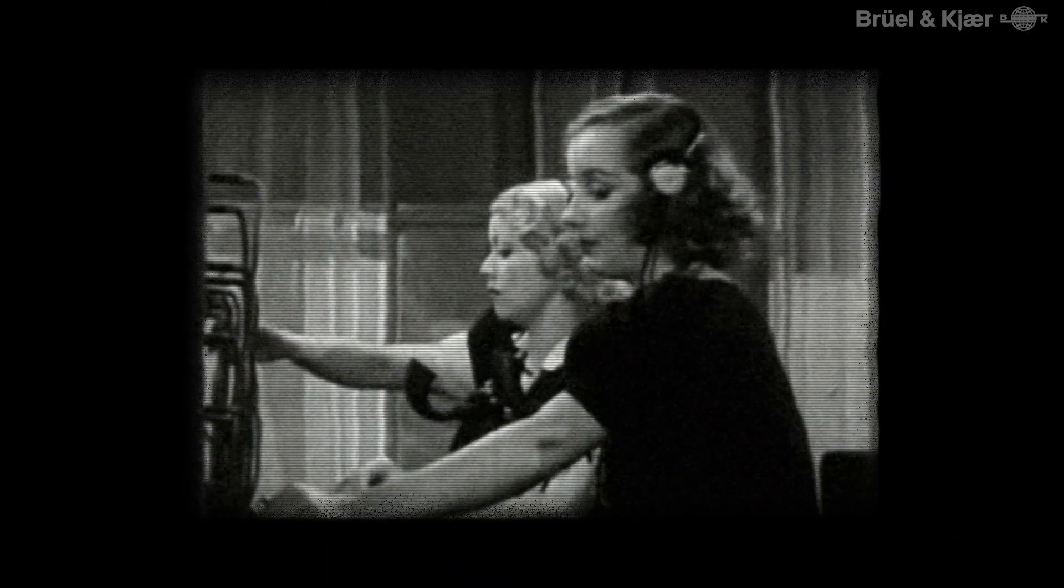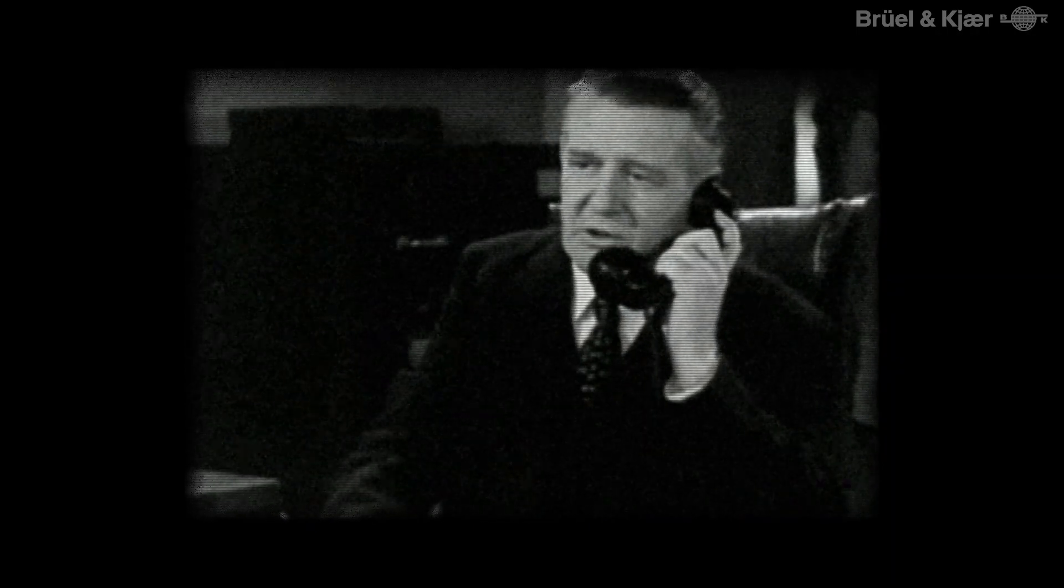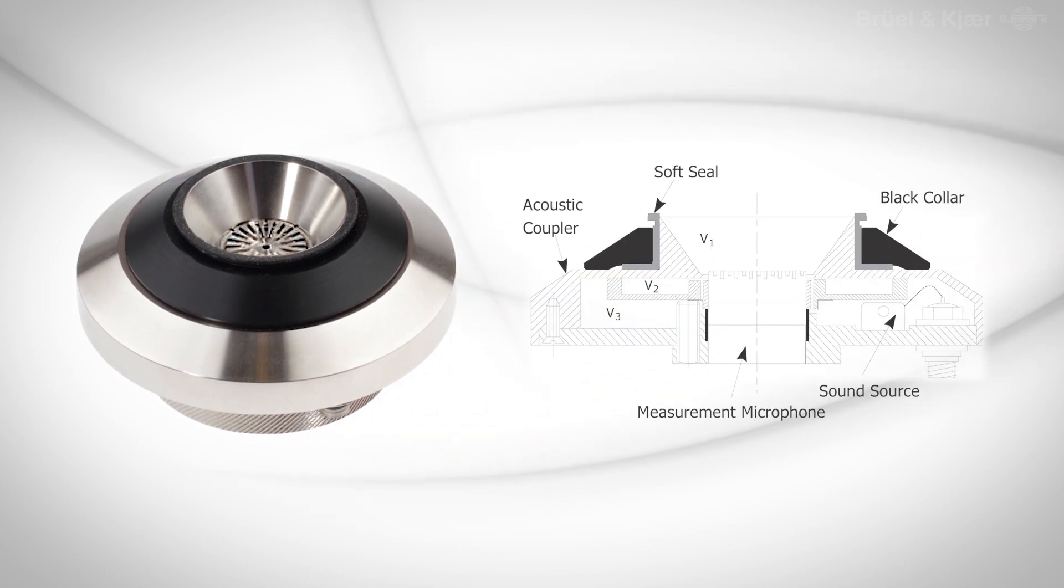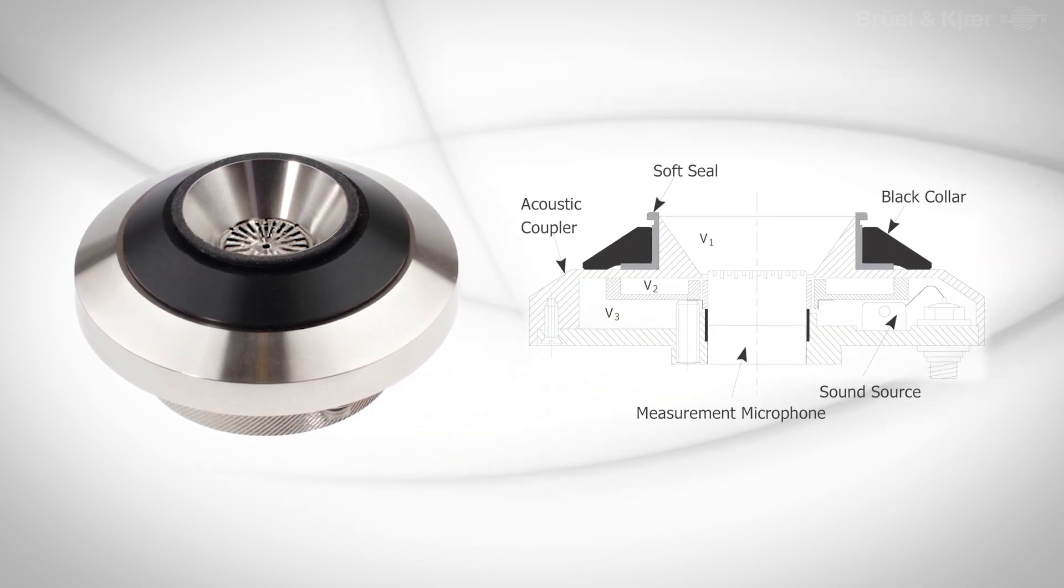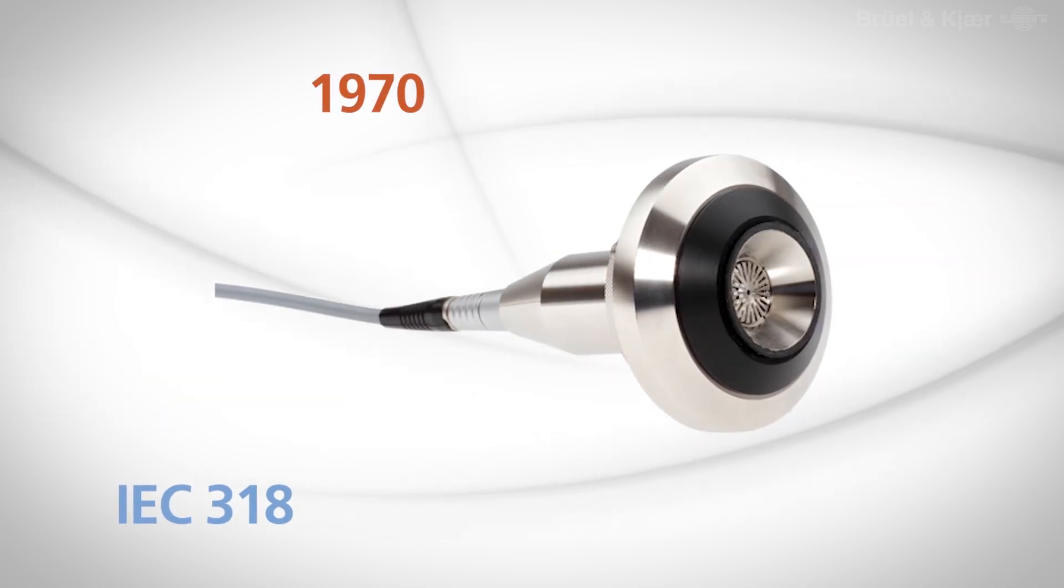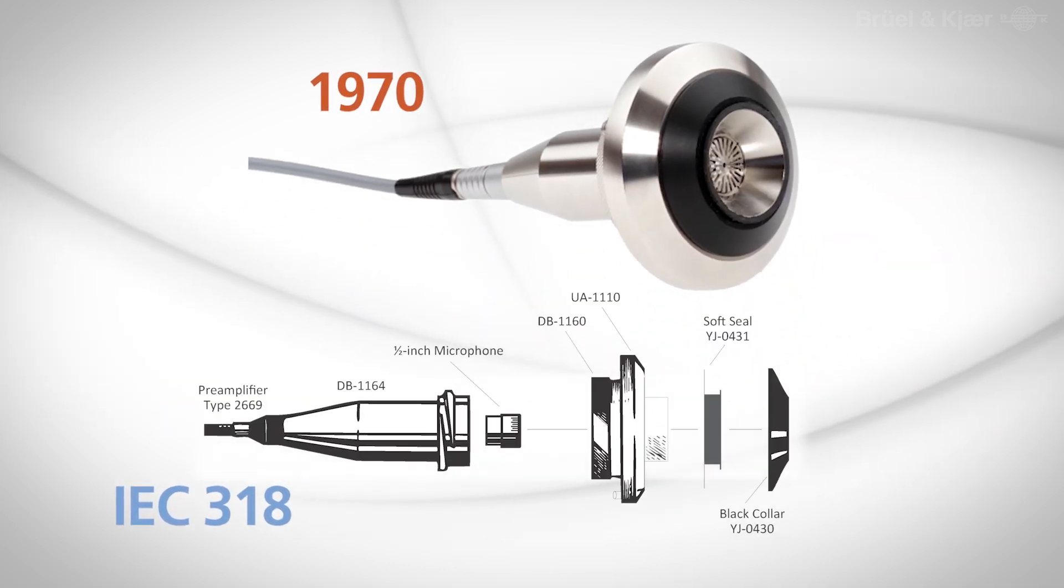The first attempts at designing an acoustic coupler were aimed at telephones and headsets available at the time. In the beginning, the ear canal and pinna were represented as a simple volume. This eventually led to the IEC 318 standard in 1970. It was a coarse simulation of the human ear, and modeling limited the frequency range to 8 kilohertz.